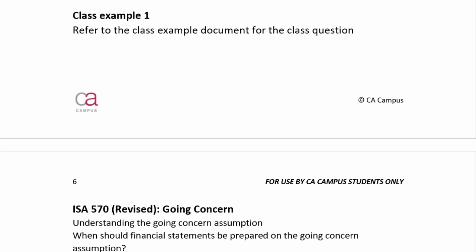Now let's attempt Class Example 1. It's made up of two questions, so it's quite a long example, but it's a comprehensive look at subsequent events. Take the time to actually do this. You'll have reading time of 4.5 minutes and writing time of 22.5 minutes, split between the two questions, so try to stick to the time allocated for each.